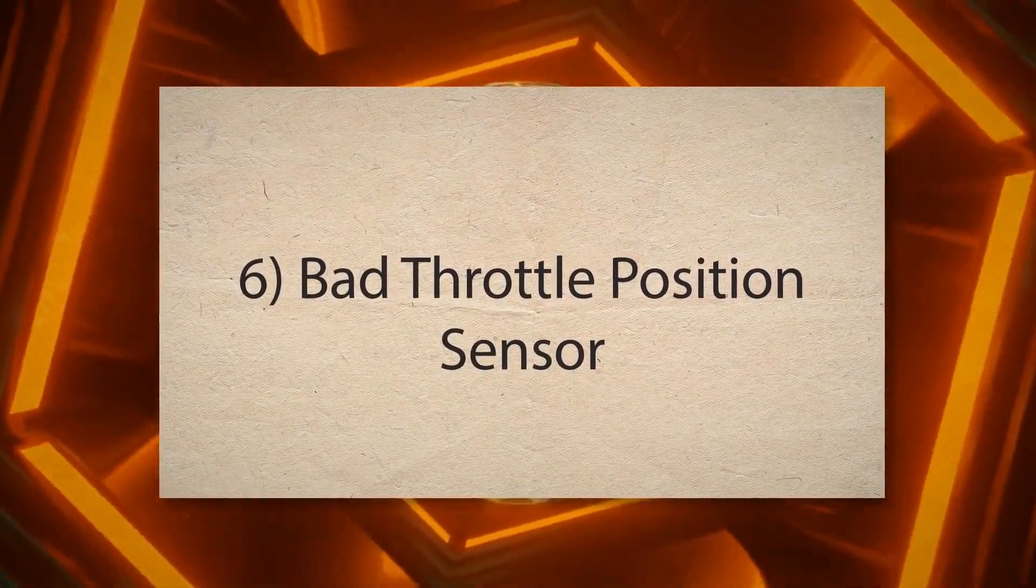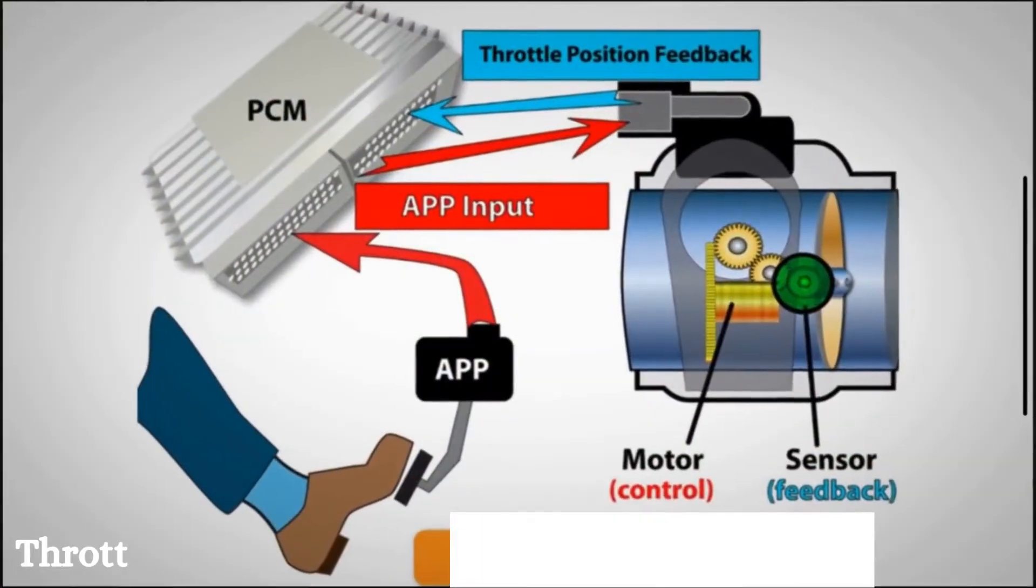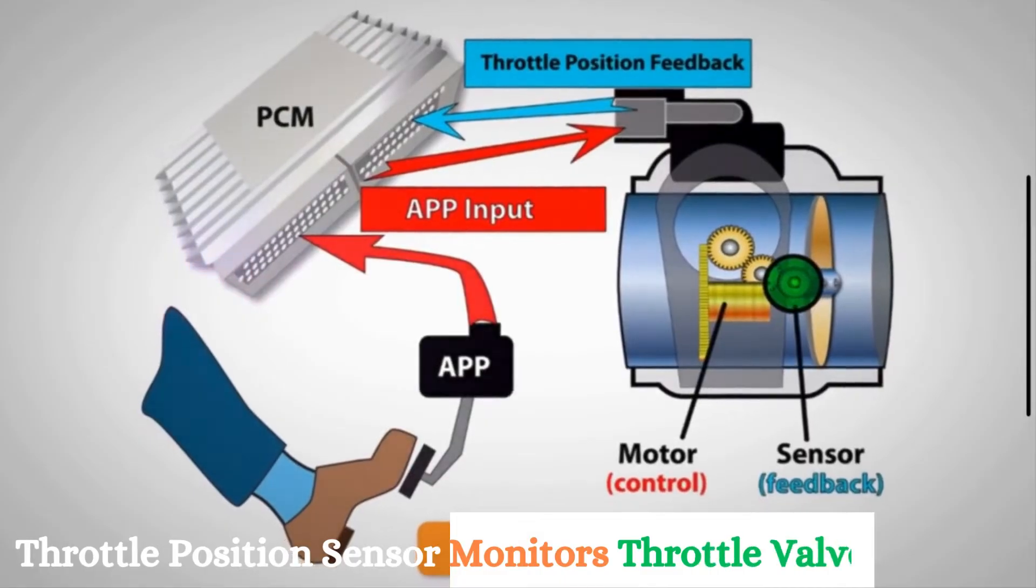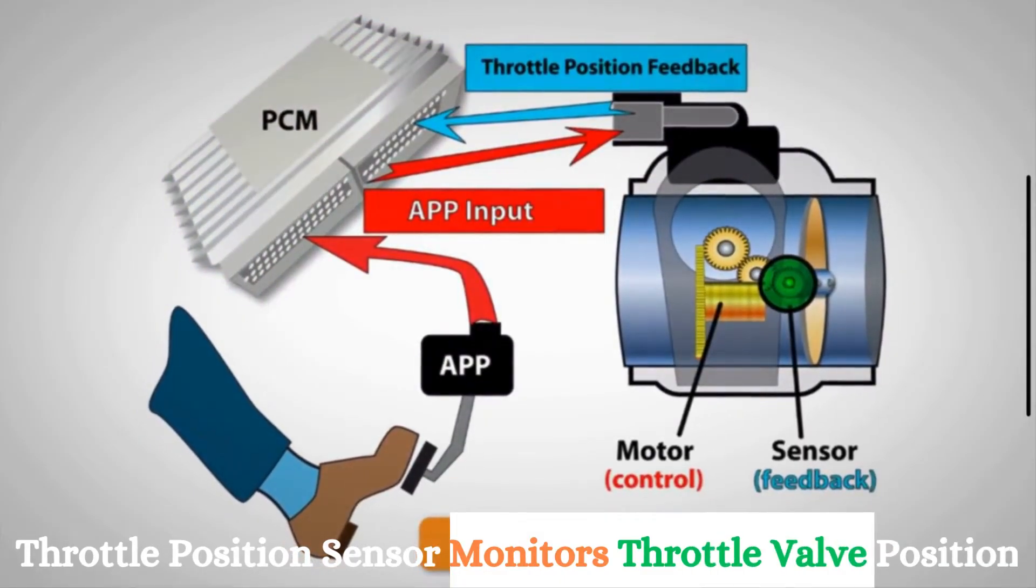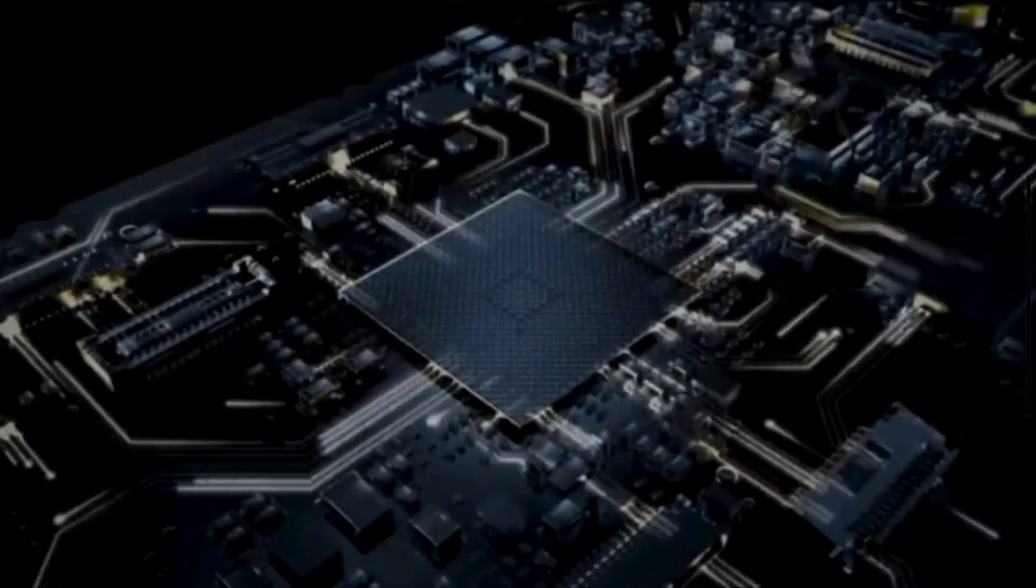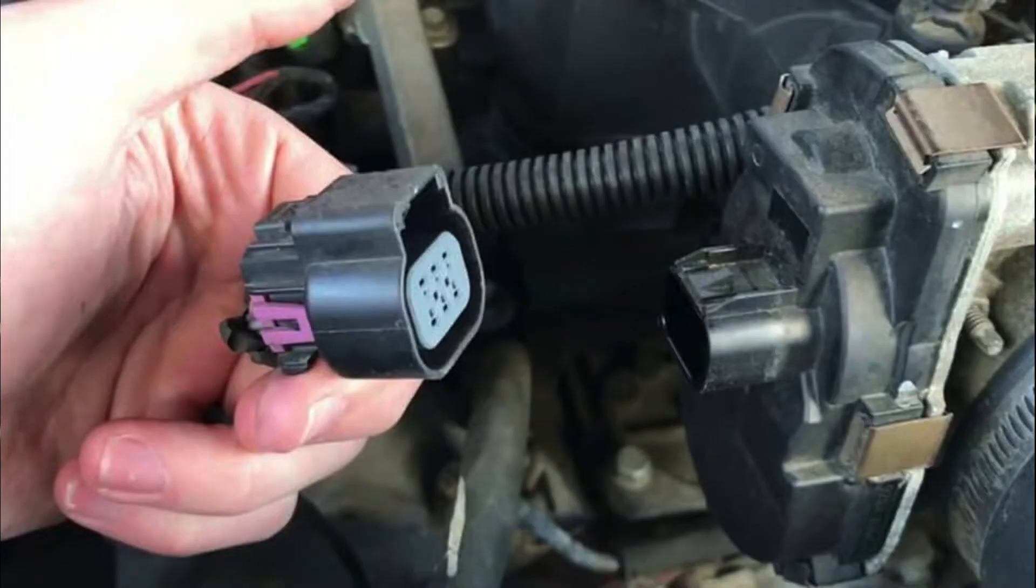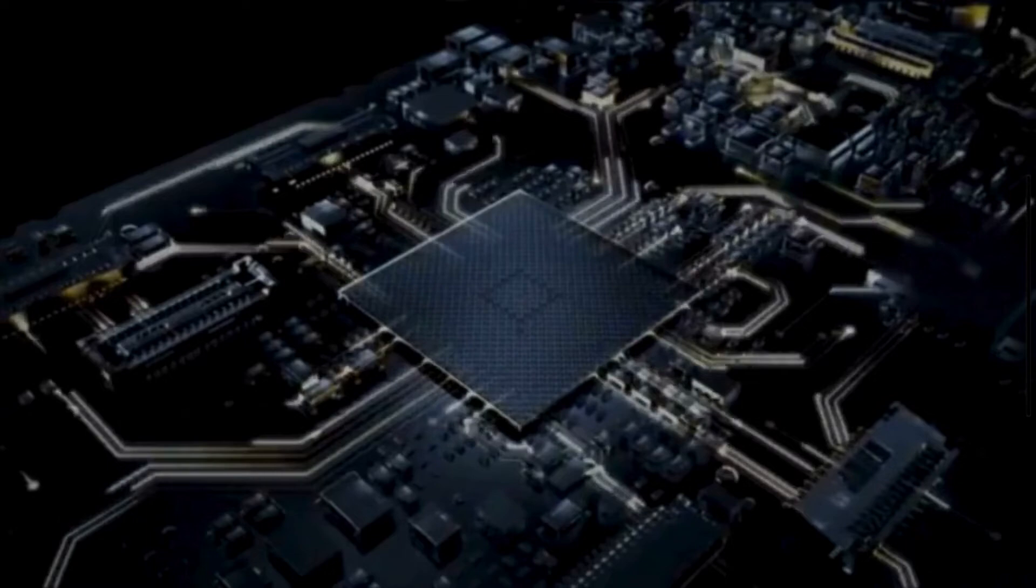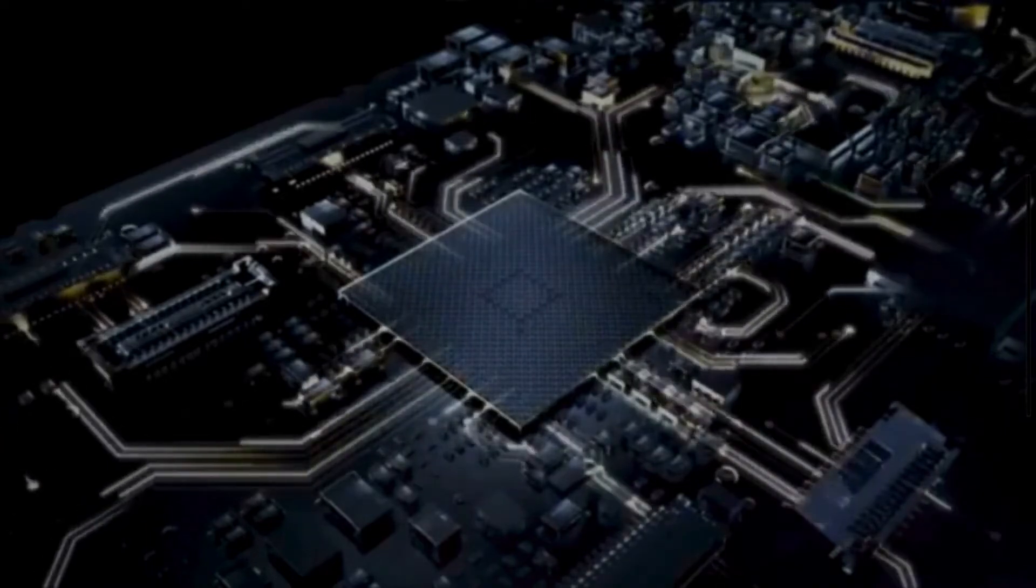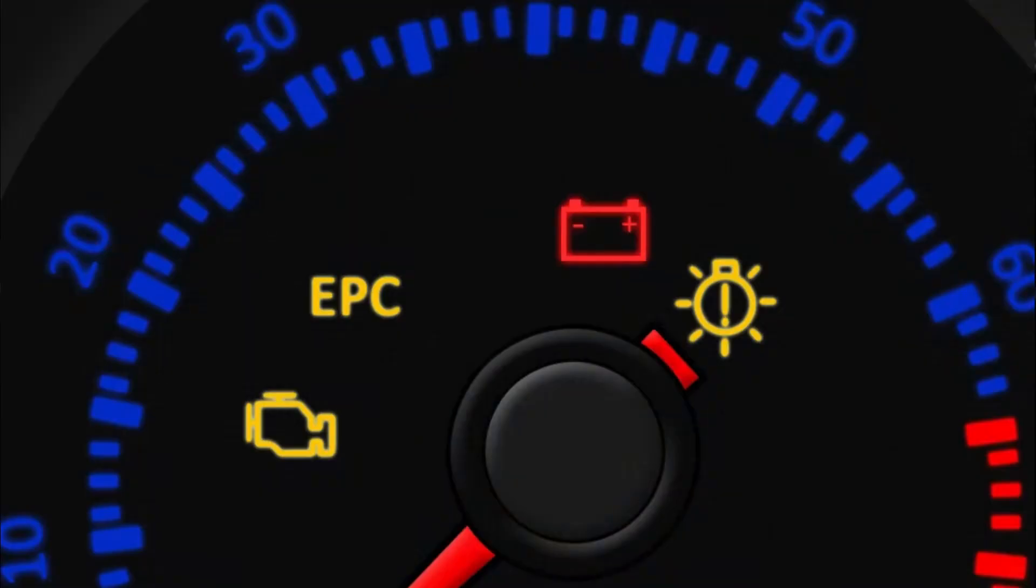Sixth, bad throttle position sensor. The throttle position sensor monitors the position of the throttle valve and sends this data to the engine control unit. If this sensor becomes faulty, it starts to send wrong information to the ECU. In such condition, the ECU can't accurately control the throttle, causing the EPC light to come on.